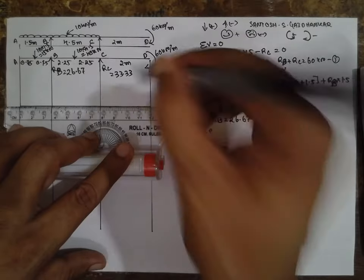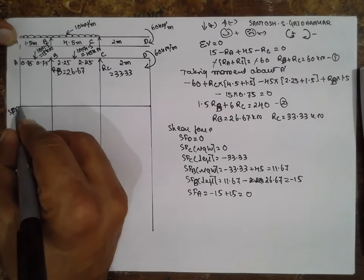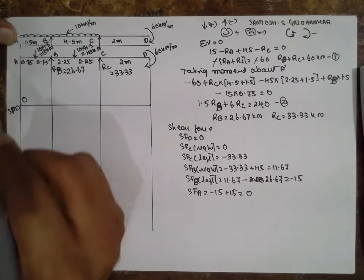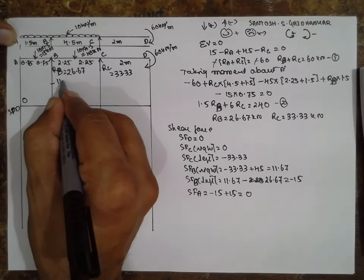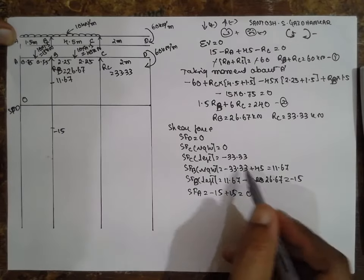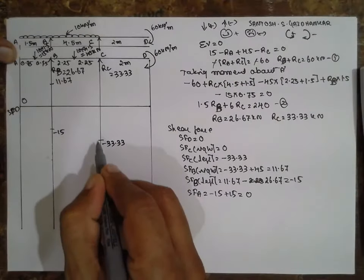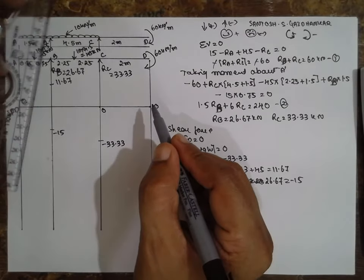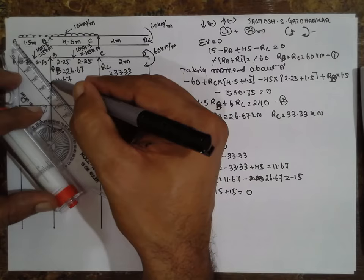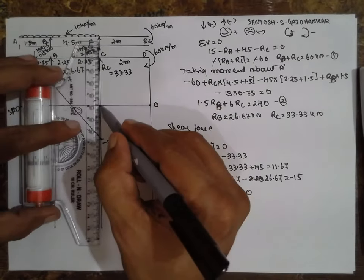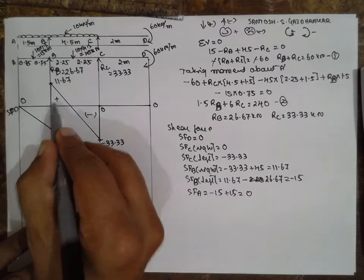This is one of the toughest problems. For the SFD: above is positive, below is negative. First value at D is zero. At B there are two values: minus 15 and positive 11.67. Then 33.33, then minus 33.33, then zero. There are inclined lines between B and C due to the UDL, giving parabolic transitions. Negative, positive, negative as the diagram shifts.